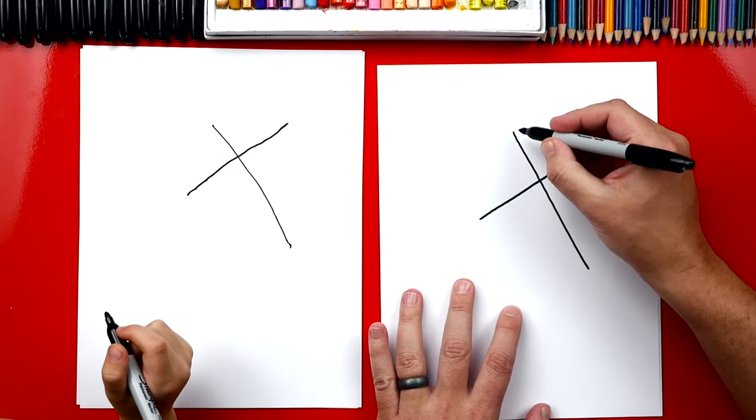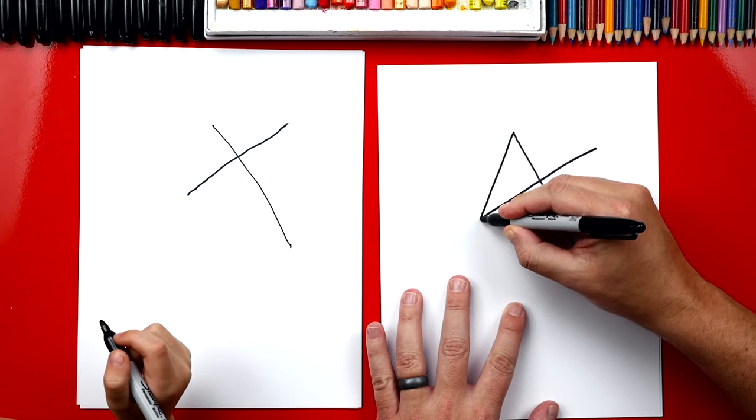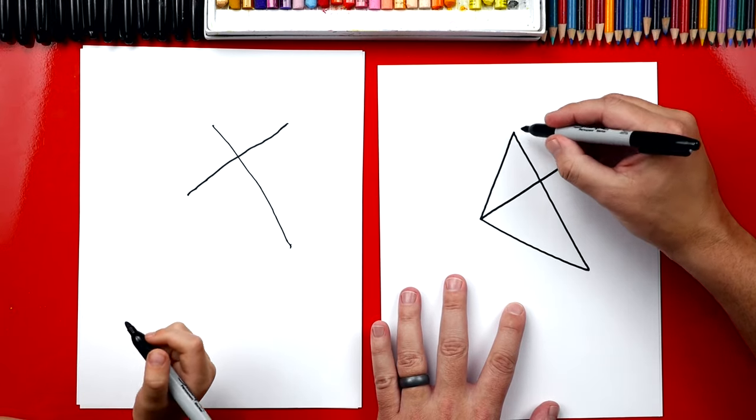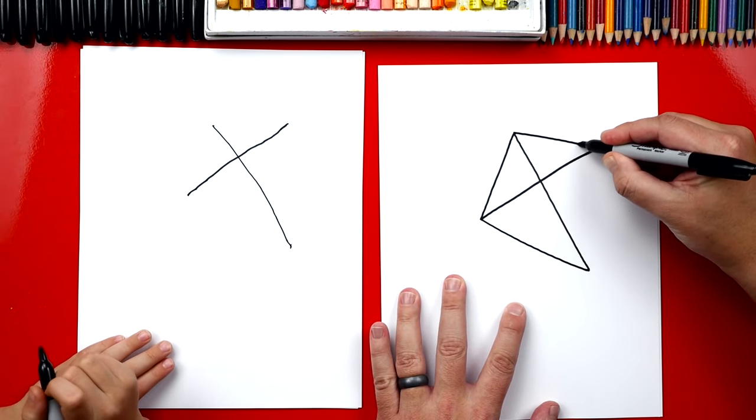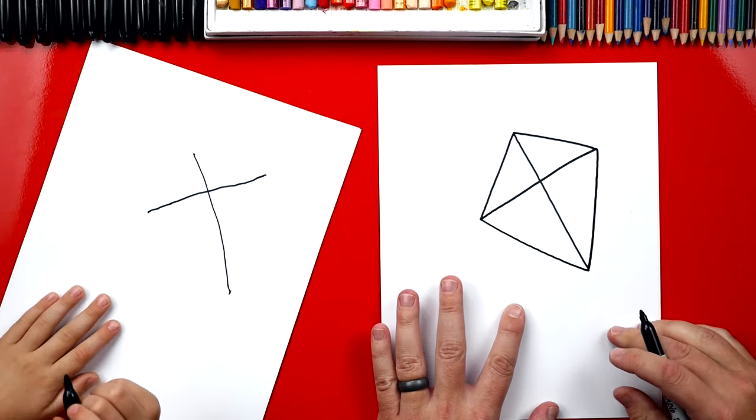Now we're going to connect the edges, okay? We'll start up at the top and connect to the side. It looks like a four now. It does look like a four. Then connect all the way down, and then connect the opposite side all the way over. And look at that. We have our diamond kite.